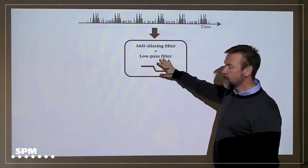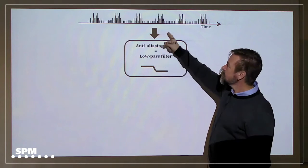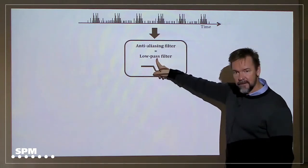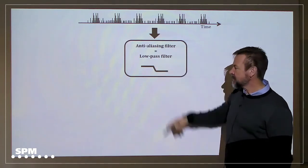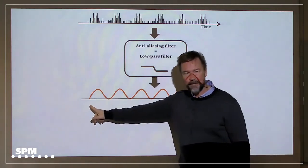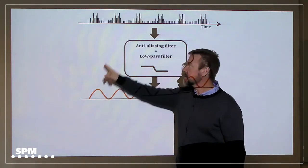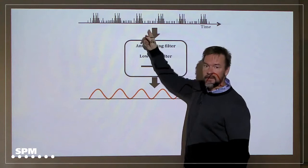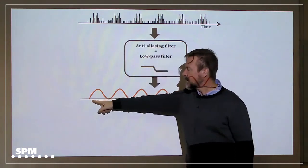And when you send the signal to a low-pass filter, the low-pass filter will smear out the peaks. So the result of filtering this signal to the low-pass filter will be this.